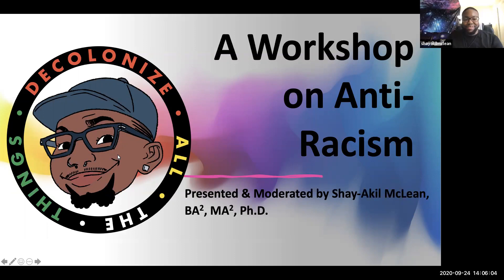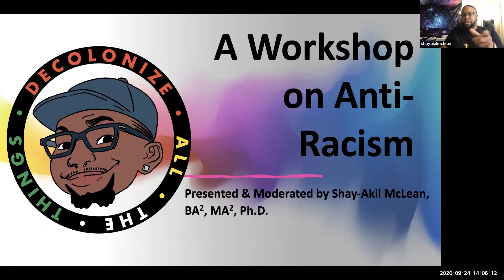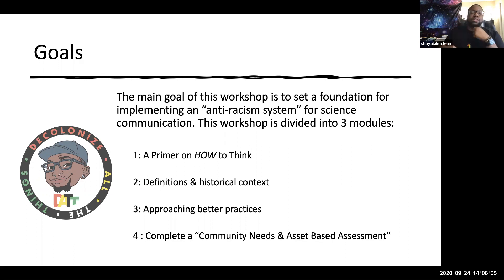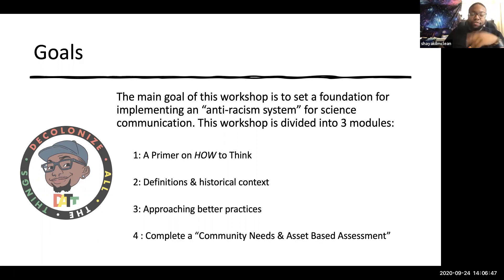Bear with me because I tried to do this in a way that's going to be most beneficial to everybody. I'm going to make sure Tyler gets the PDF so it can be shared. The main goals of the workshop are really just to set a foundation — how do you implement an anti-racist system for science communication? I've divided it into three modules. Module one is a pre-module, a primer on how to think, which is helpful because styles of critical thinking can differ across the sciences, humanities, social sciences, and STEM.